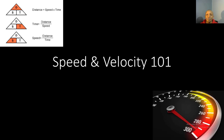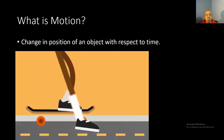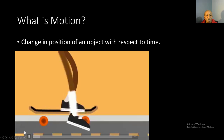First things first — what is motion? Motion is a change of position of an object with respect to time. If you notice, the skateboarders started off in one place and then ended up in another place, so changing their position with respect to time.